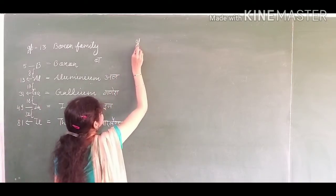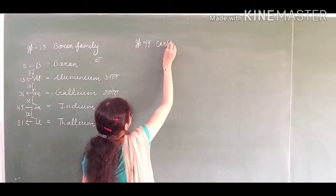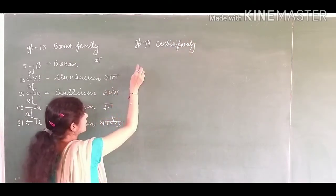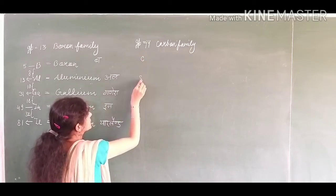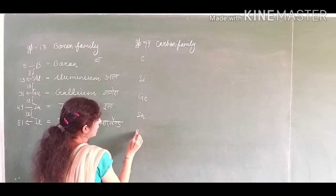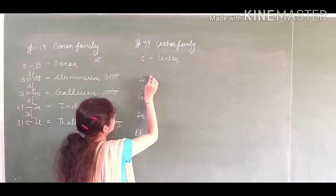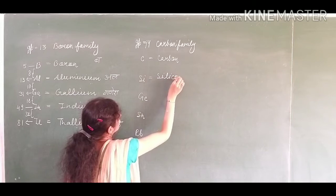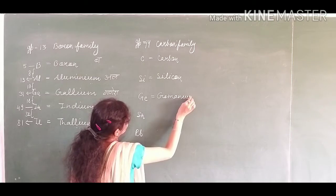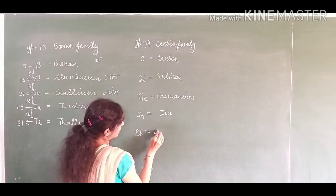Let's talk about group 14. Group 14 we call carbon family. So we will start from carbon, silicon, germanium, tin and lead. The element names are carbon, silicon, germanium, Sn for tin and Pb for lead.